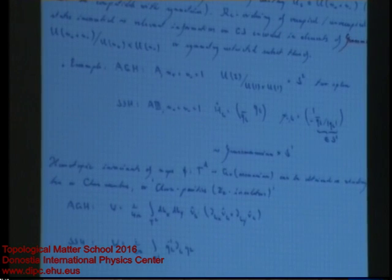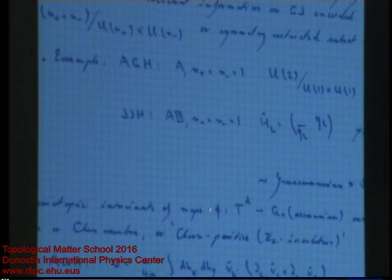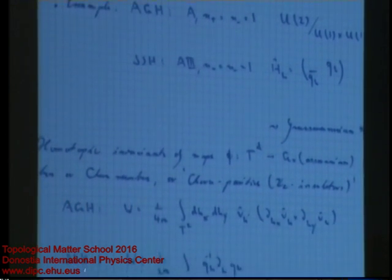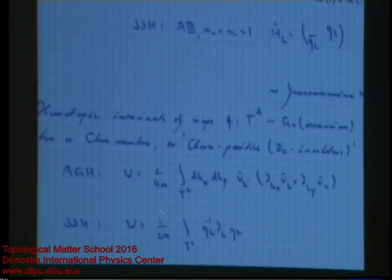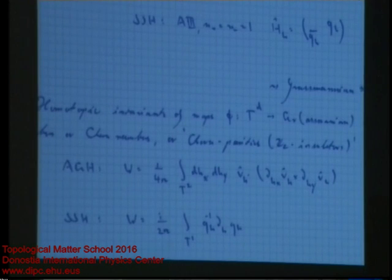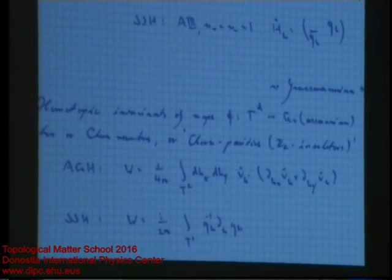The relevant keywords here are that the classifying numbers can be obtained as winding numbers, Chern numbers, or Chern parities in cases where we have topological insulators. They can be computed typically in terms of certain integrals — you do so when you have a given ground state and a given Brillouin zone.